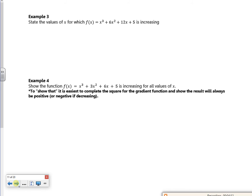Let's have a look at example 3. So it says, state the values for which it's increasing. So f dashed of x is 3x squared plus 12x plus 12, increasing when f dashed of x is greater than 0. So 3x squared plus 12x plus 12 is greater than 0. Stick it in poly.